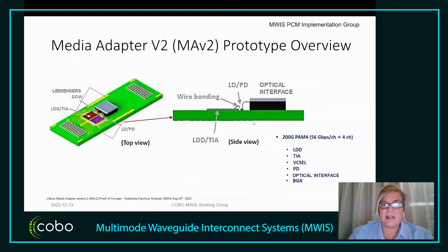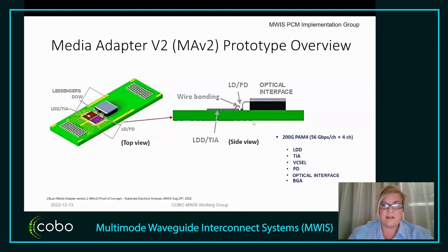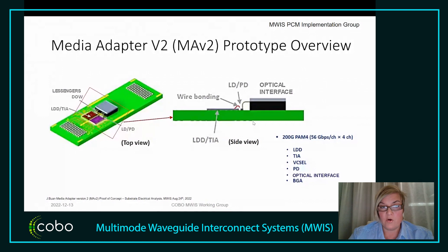The media adapter that is attached is the optical engine that converts electrical signal to light. In this particular implementation group, we have a media adapter device visible in this slide. We have an OEBGA type of engine with a regular BGA interface. It has lasers and photodetectors — VCSEL and PD devices — as well as driver electronics: LDD and TIA. It obviously also has the optical interface. The left-hand side diagram shows the OEBGA from the bottom side up, as it will be flipped over when assembled on a board.